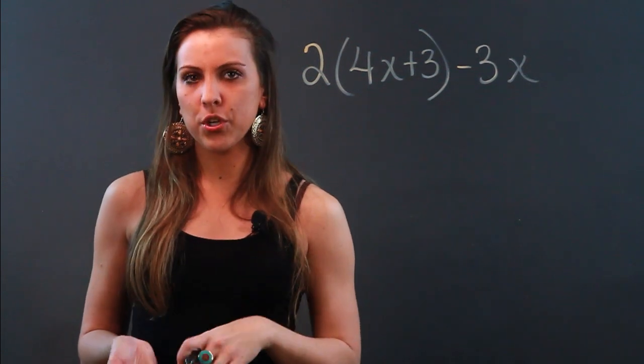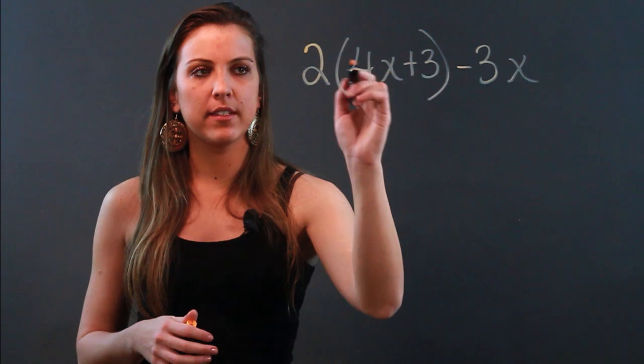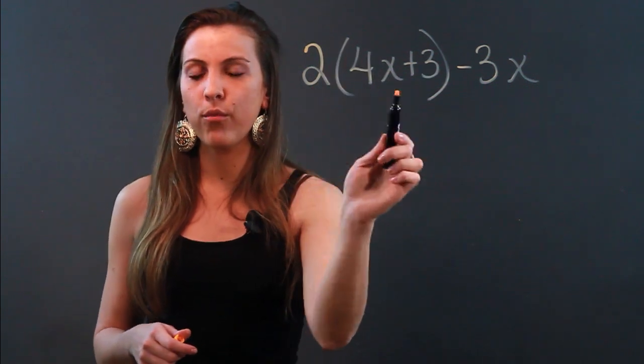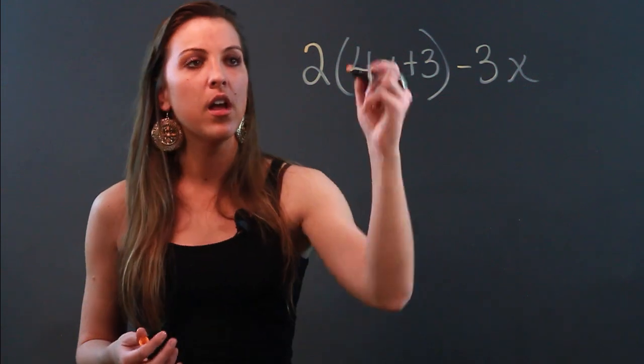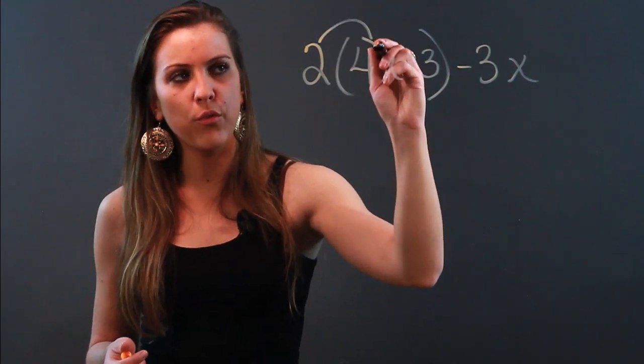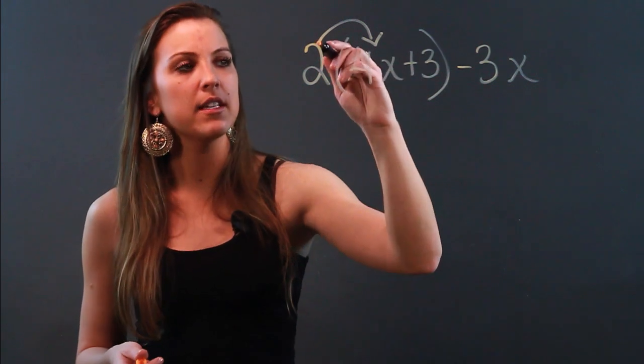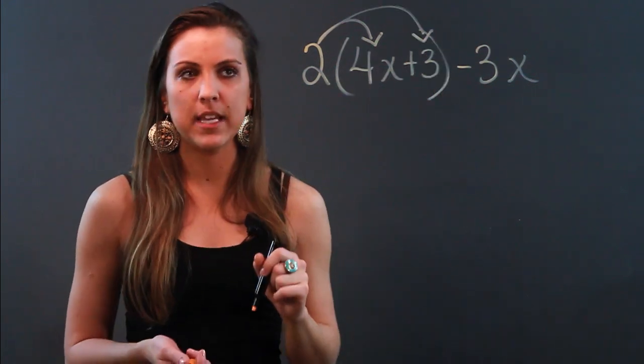So you always distribute before you combine. I'm going to go ahead and distribute this - whenever you see a number before parentheses, it means to distribute. So I'm going to distribute this to the 4x, my first term inside my parentheses, and to the 3, the second term inside my parentheses.